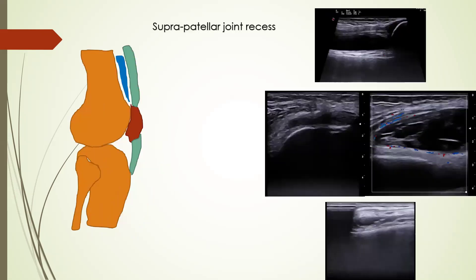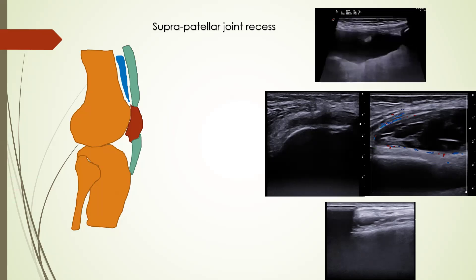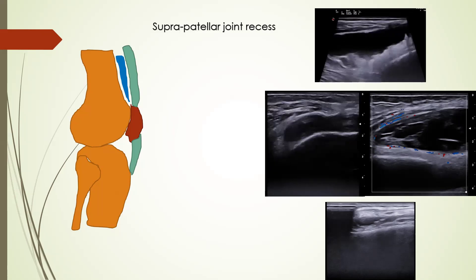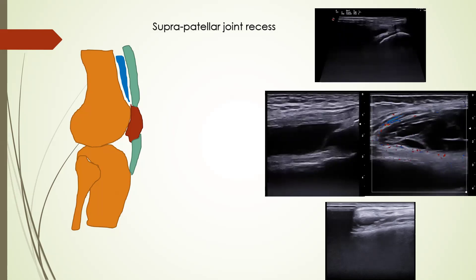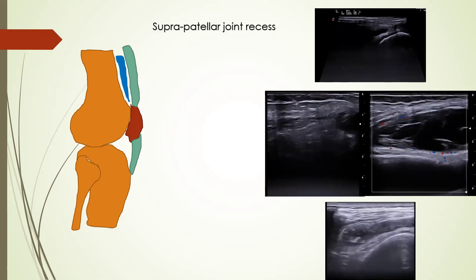Next is the suprapatellar joint recess. When there is joint effusion, it accumulates in the suprapatellar joint recess, and the echogenicity of the joint fluid is affected by the underlying pathology. It can be echo-free, as in this case where fluid is completely echo-free but there is hyperechoic synovial thickening suggestive of chronic synovitis. Fluid can also be complex, with presence of soft tissue, crystals, and loose bodies within the suprapatellar joint recess.